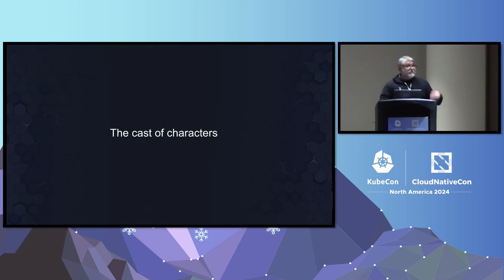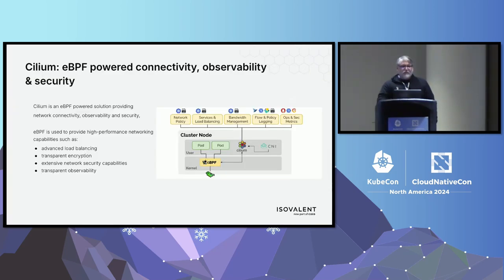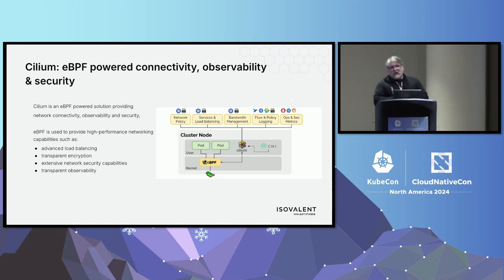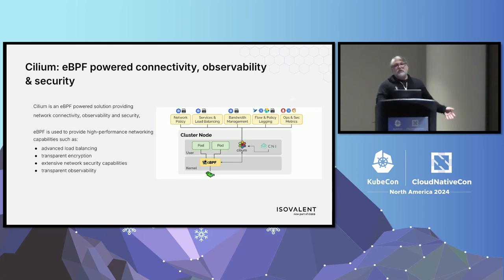This is the cast of characters — the things I'll be mentioning that impact the scalability story for Cilium, and probably much of it will impact other projects. Cilium is an eBPF-powered connectivity, observability, and security platform for Kubernetes clusters. eBPF makes the Linux kernel programmable, and Cilium takes advantage of that to do enhanced networking performance inside your Kubernetes nodes — transparent encryption, advanced load balancing, transparent observability. I'm talking about scalability issues associated with custom resource use by this project.